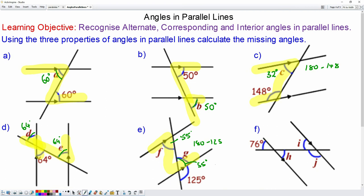And finally, question h. You can see that h and 76 are vertically opposite, so they will be equal. So h will be 76 degrees. And h and j are in an n shape, so they will add up to 180.